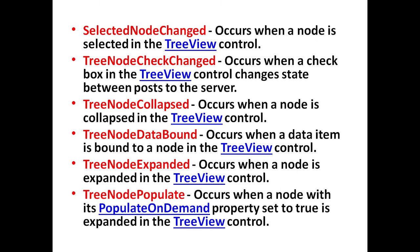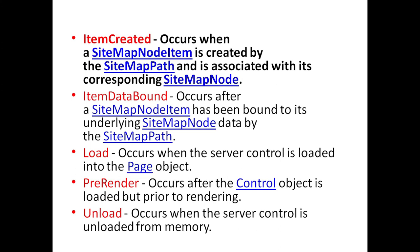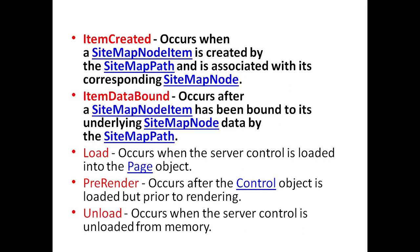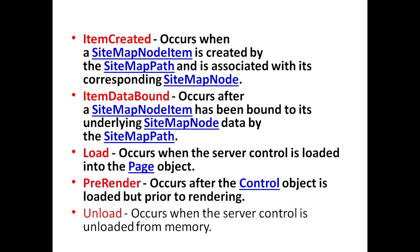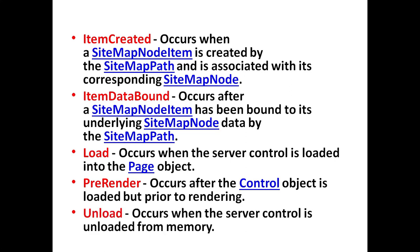TreeNodePopulate event occurs when a node with its PopulateOnDemand property set to True is expanded in the TreeView control. ItemCreated event occurs when a sitemap node item is created by the SiteMapPath and is associated with its corresponding sitemap node. ItemDataBound event occurs after a sitemap node has been bound to its underlying sitemap node data by its SiteMapPath. Load event occurs when the server control is loaded into the page object. PreRender event occurs after the control object is loaded but prior to rendering. UnLoad event occurs when the server control is unloaded from memory.